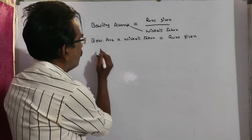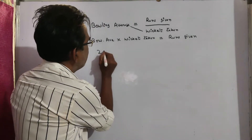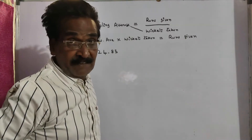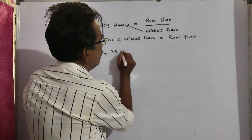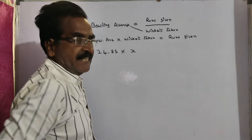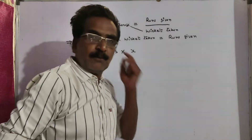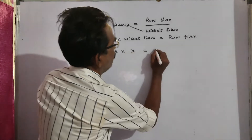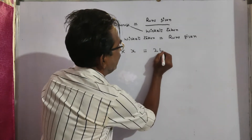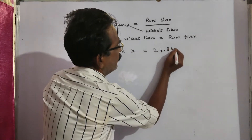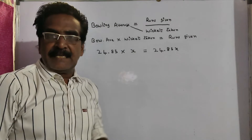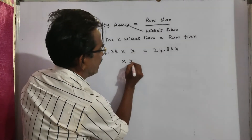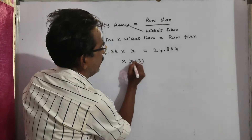In the present problem, the original bowling average is 24.85. Say he has taken x wickets up to that match. This gives total runs as 24.85x. In the present match he has taken 5 wickets, so the total number of wickets becomes x plus 5.